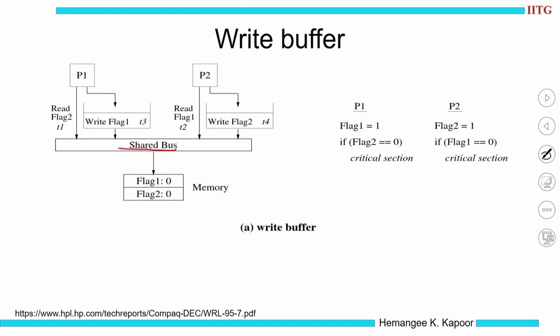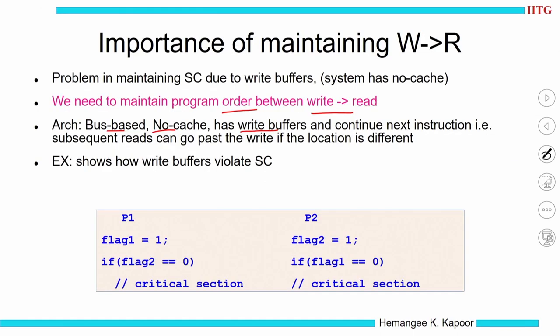P1 and P2 go on to the bus to the memory, but whenever a write happens it uses a write buffer. The write buffer temporarily stores the write because the processor does not immediately need the written value, so it puts it into the write buffer and continues past the write to the read instruction. This means the write-followed-by-read program order will get violated if we have write buffers.